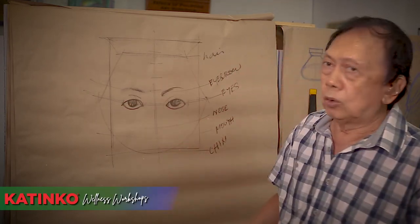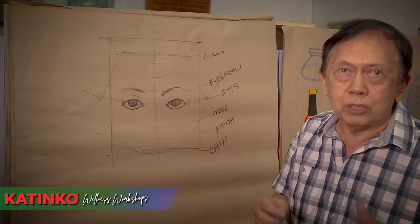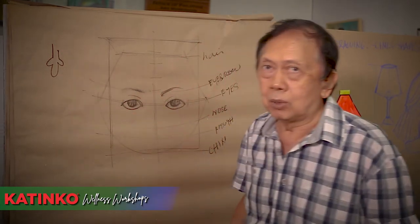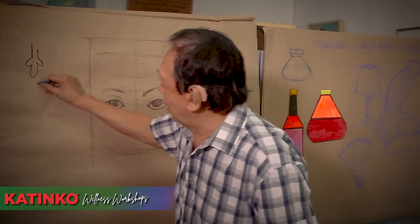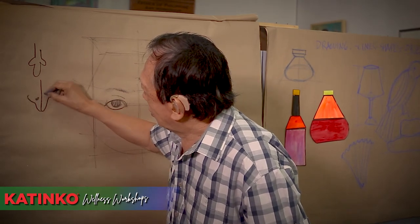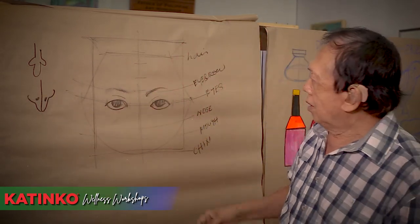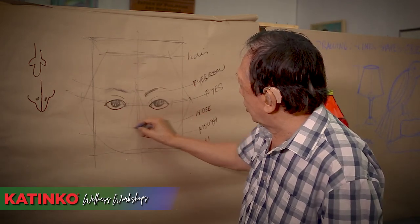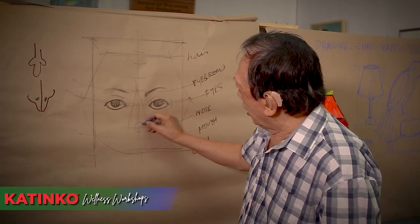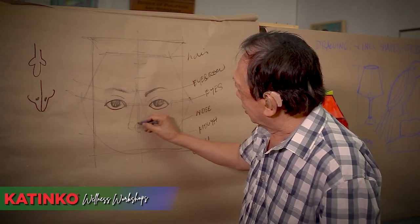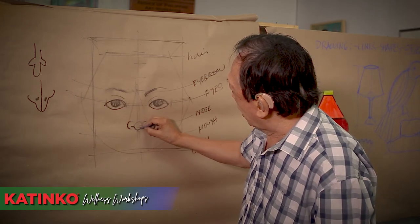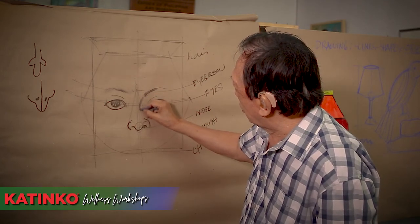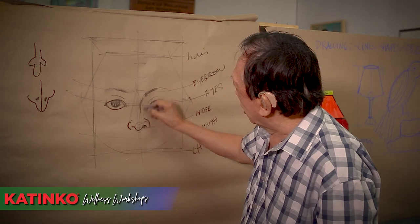Patulad itong ilong. Ito, itong kilay. Halimbawa, ito'y kilay niyan. Meron bata kung magdrawing ng ilong - ganito. Tama ba yan? Hindi. Pag magdrawing tayo ng ilong, ang ilong natin ay triangular shape. And then tatlong circle. Just follow this guideline. Ito'y ilong natin - triangle. And then this is narrow, wider, narrow - there.